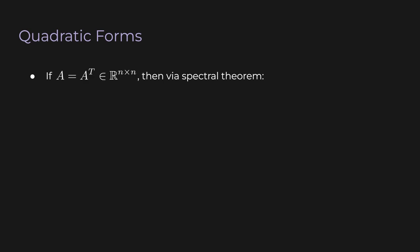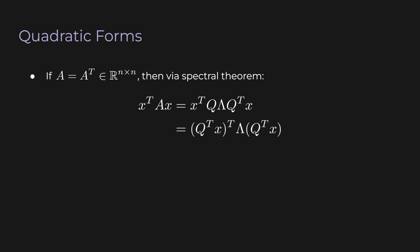Assuming A is real and symmetric, the spectral theorem gives us: x transpose Ax equals x transpose Q Λ Q transpose x, where Q is an orthogonal matrix whose columns are the eigenvectors of A, and Λ is a diagonal matrix with the corresponding eigenvalues along the main diagonal. We can apply the transpose operation twice to x transpose Q, yielding a nice expression. The part before Λ is just the transpose of the part after Λ — it's essentially another quadratic form.